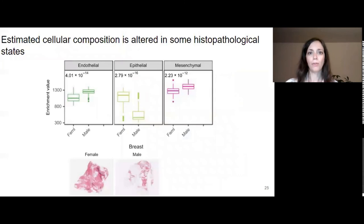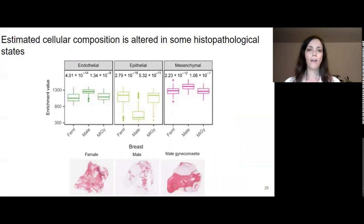The second example I want to show is about using cellular composition to characterize some histopathological states. Here I'm showing enrichment values for breast samples in males and females and some exemplary slides from the GTEx portal again. It's pretty evident that there is a difference between male and female, especially at the level of epithelial cells, and this is expected considering all the ductal structures that are present in the breast of females. However, there is a condition in males that's called gynecomastia, which is described as an enlargement or swelling of breast tissue in males. You can see how in these individuals the cellular composition is more similar to that of females, especially if you look at epithelial cells.